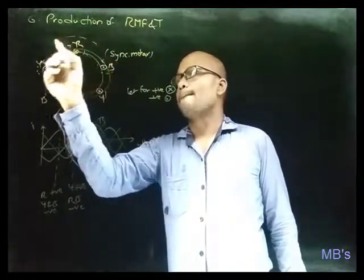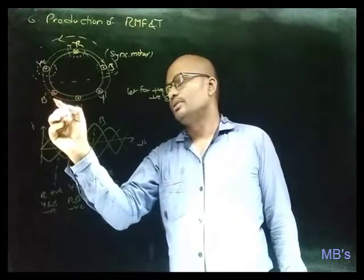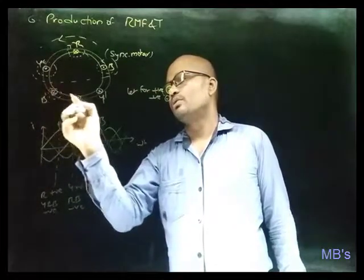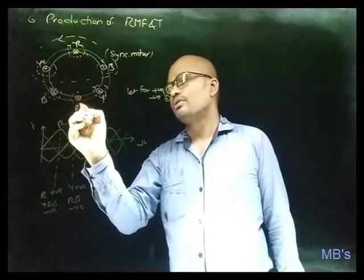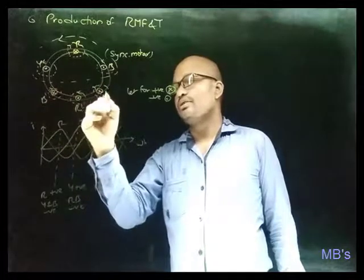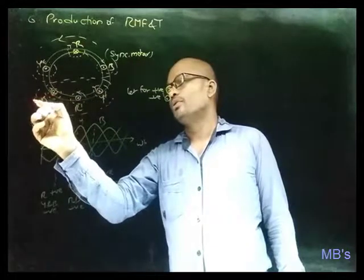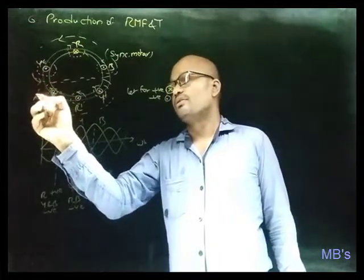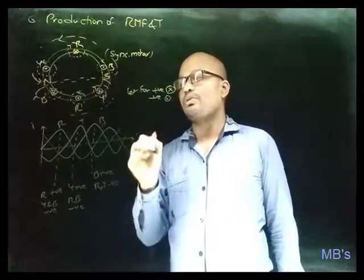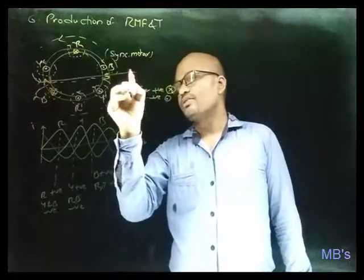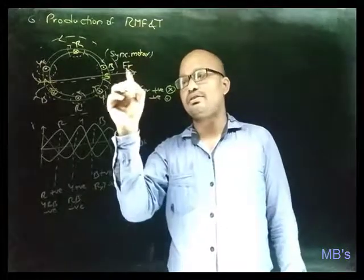The resultant will be anticlockwise. Applying similarly: this is cross so clockwise, this is cross so clockwise, and this is dot so anticlockwise, and the resultant is clockwise. If you observe here, the resultants are adding — this portion is acting as north pole and this portion is acting as south pole. The resultant field is towards this direction, FR.